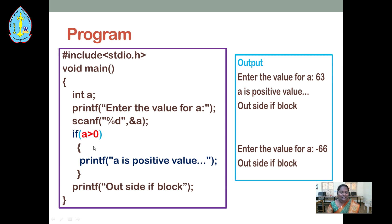Within the main function, I have written the code. Here, variable a is declared as an integer data type. In the printf function, I want to display a message to get a value from the user — 'enter the value for a'. Whatever message you give in the printf, it will be printed to the output. After that, I have used the scanf function with the address of a. Here I have used %d, which represents variable a as an integer type. To get an integer value from the user, we should include %d within the scanf function.